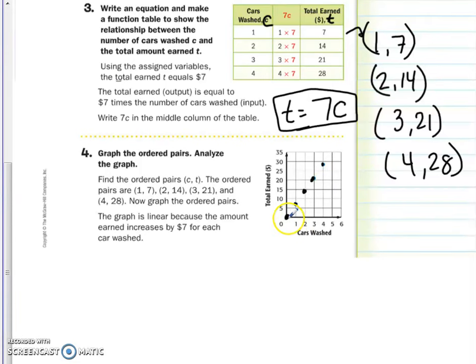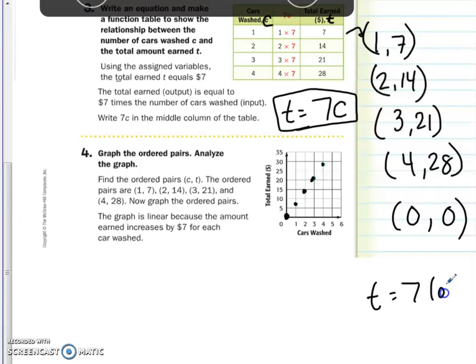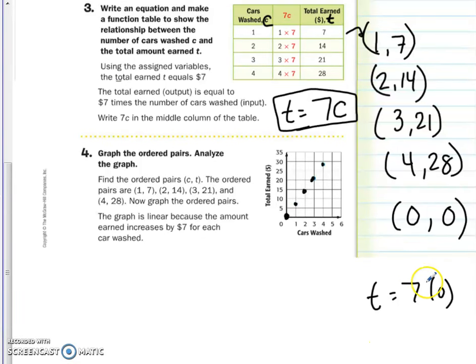You're probably asking yourself, why is there a 0, 0 there? Well, think about it. If you washed 0 cars, you would earn $0. And the proof is using the equation T equals 7C. If I put a 0 in for C, 7 times 0 is 0. So that's how we know 0, 0 is 1 of the 2.